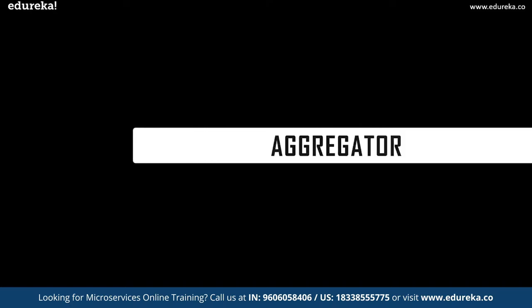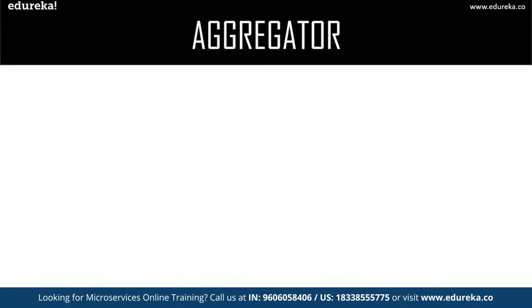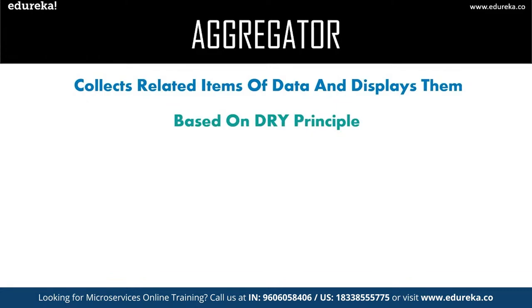When you hear the term aggregator, in the computing world it refers to a website or program that collects related items of data and displays them. Even in microservices, the aggregator pattern is basically a web page that invokes various services to get the required information or achieve the required functionality. When you build a microservices architecture by breaking down a monolithic application, the source of output gets divided. This pattern proves beneficial when you need output by combining data from multiple services.